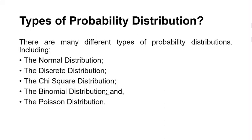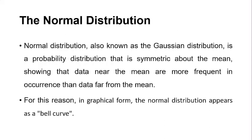Here you can see there are five types of probability distribution, including the normal probability distribution, the discrete probability distribution, the chi-square distribution, the binomial distribution, and the Poisson distribution. I will talk about each of these distributions.